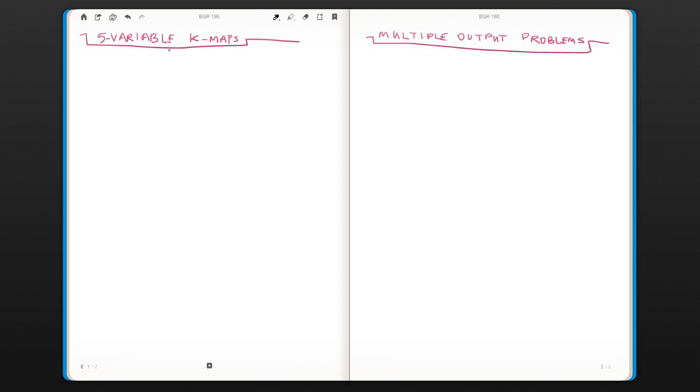One is the five variable K-maps and one is the multiple output problems. So for five variable K-maps, think that you have five inputs A, B, C, D, E. In this case, you have a total of 32 squares that you need to put in a K-map.